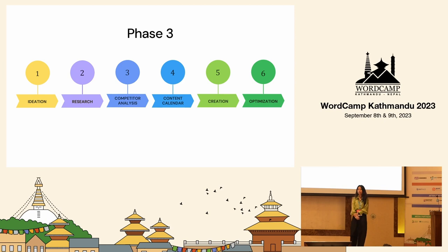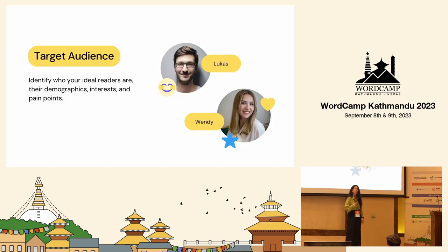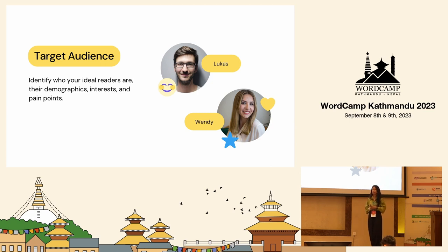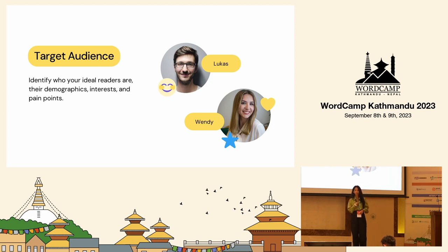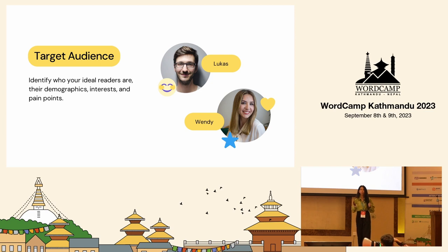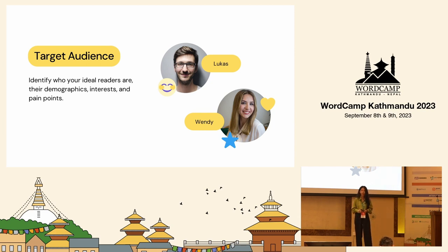Besides competitor analysis, there was another critical step that I was completely missing out on: understanding my target audience. As a beginner, I thought content marketing was all about attracting as many people as I could to my website. But I soon realized I was completely wrong. By doing that, I was not just wasting my own time — I was also wasting my team's time and effort, and also the organization's costs. Content marketing is actually about attracting the right people to your website — those who are likely to buy your product or services, and who have desires, needs and pain points that your product or services can solve.